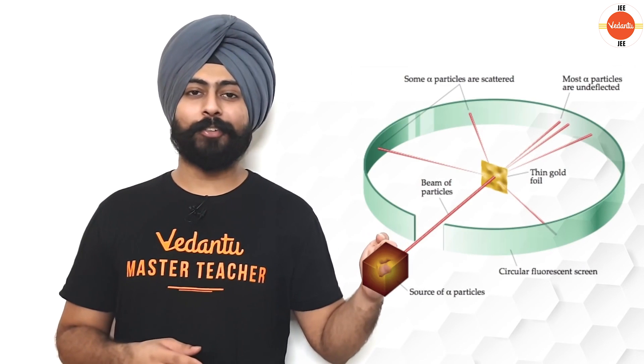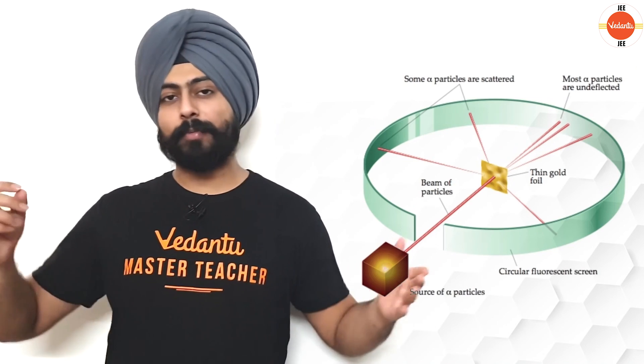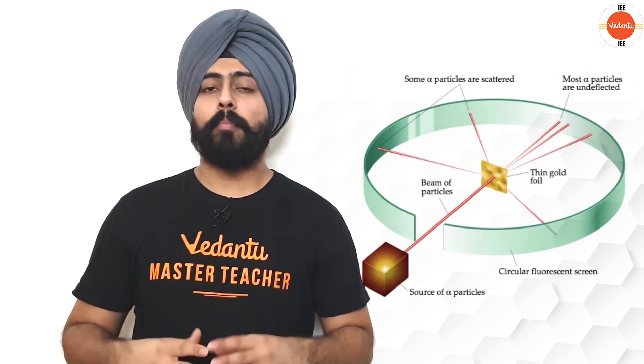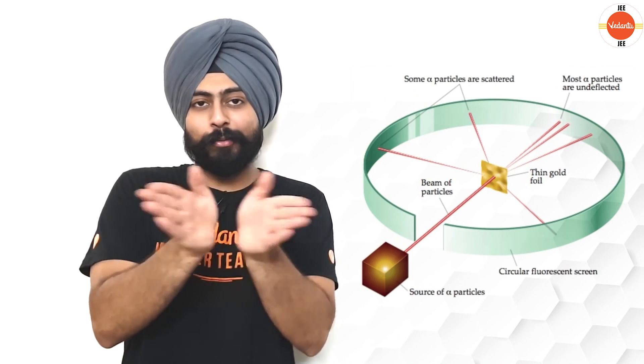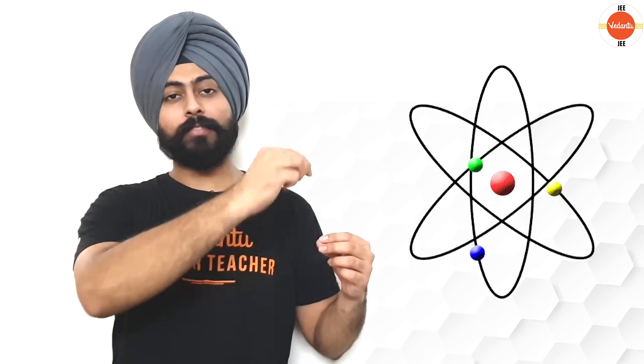Then comes the very famous Rutherford's alpha scattering experiment, where they took a very thin gold foil and bombarded it with alpha particles, which are essentially positively charged particles. What was expected was that if these positive particles hit the atom, they would deflect backwards, because according to the Plum Pudding model the atom was a positively charged sphere. But something really surprising happened — the majority of these alpha particles just went straight through the foil. Only a few got deflected and very few actually came back. This meant that most of the atom is empty space, which led to the discovery of the nucleus. Rutherford said that the nucleus is present at the center of the atom, is very small compared to the size of the atom, and it contains all of the positive charge and most of the mass of the atom. Rutherford also said that electrons are revolving around the nucleus via electrostatic forces.